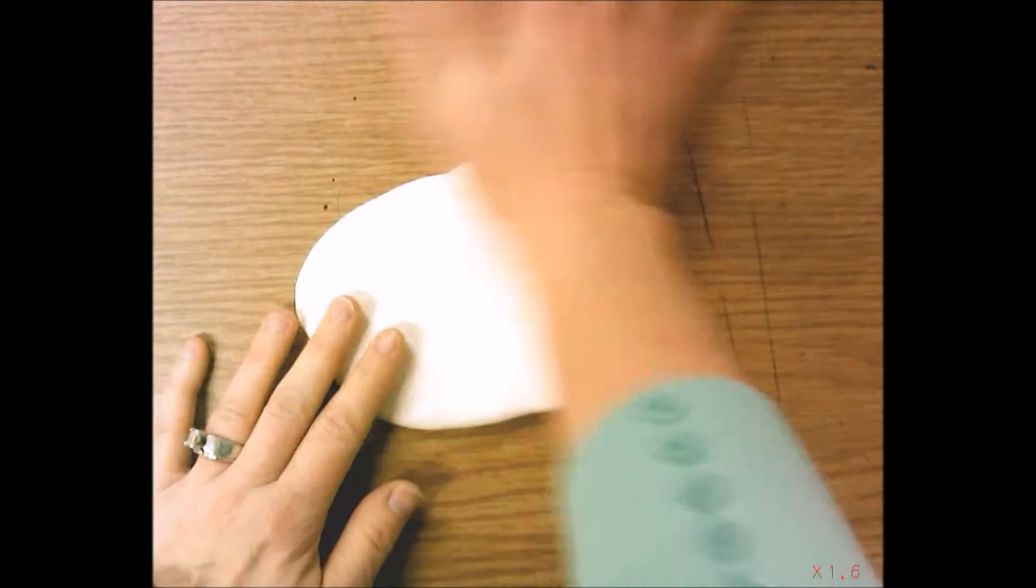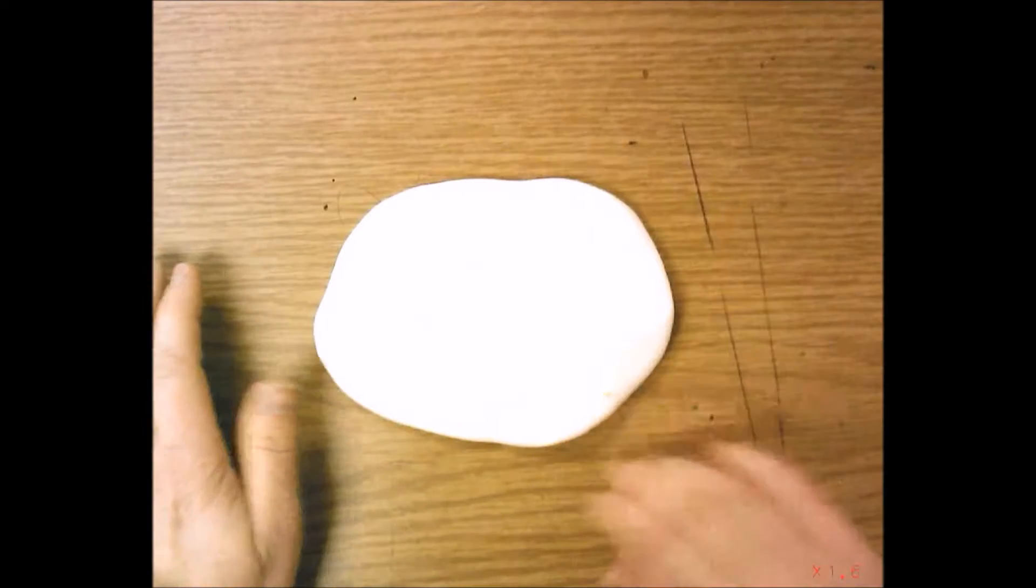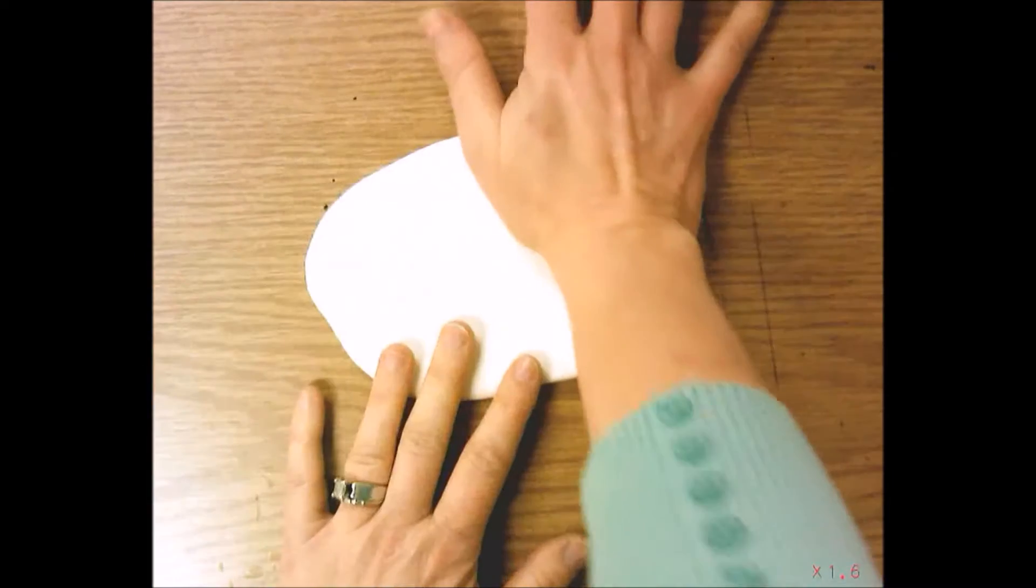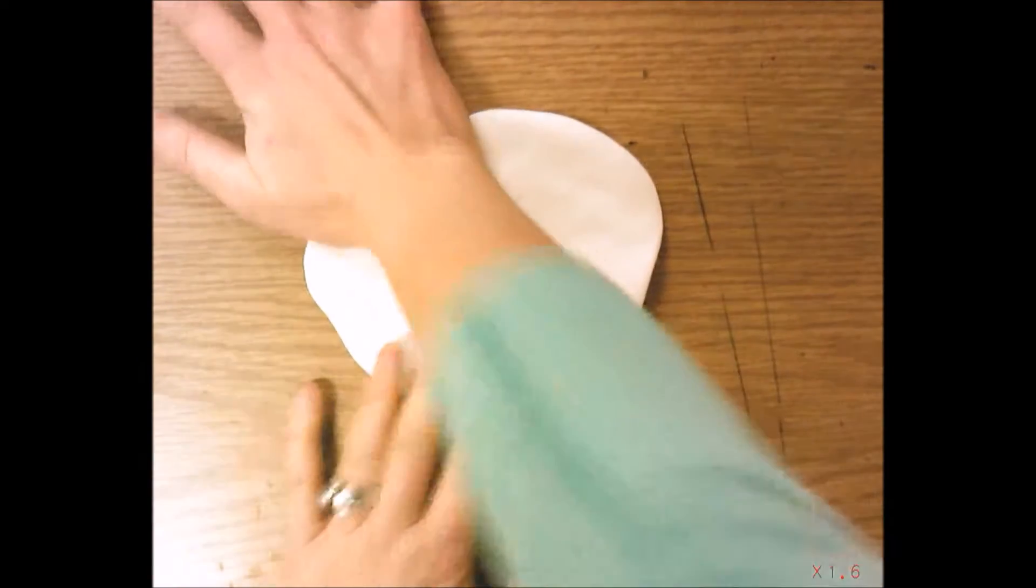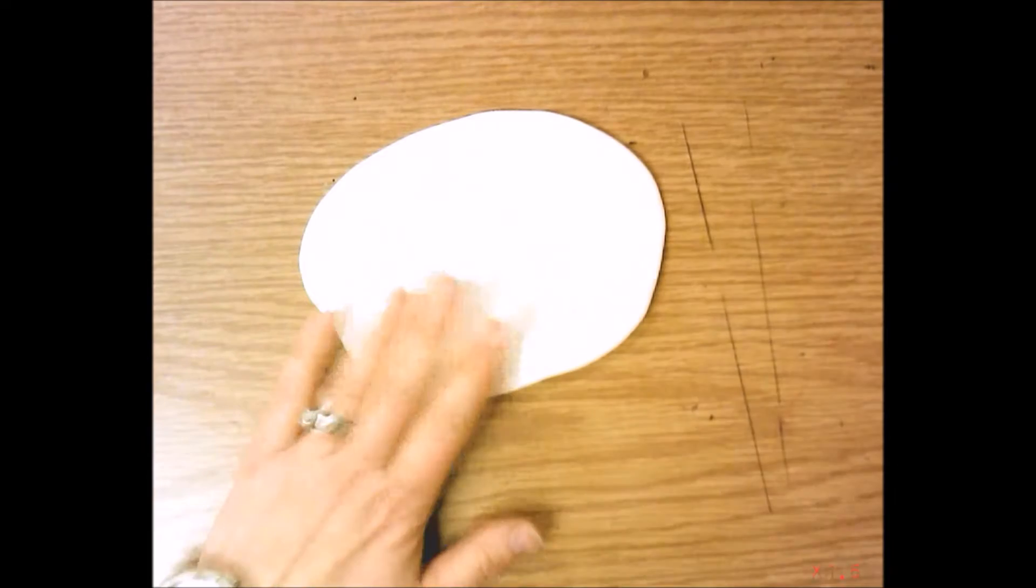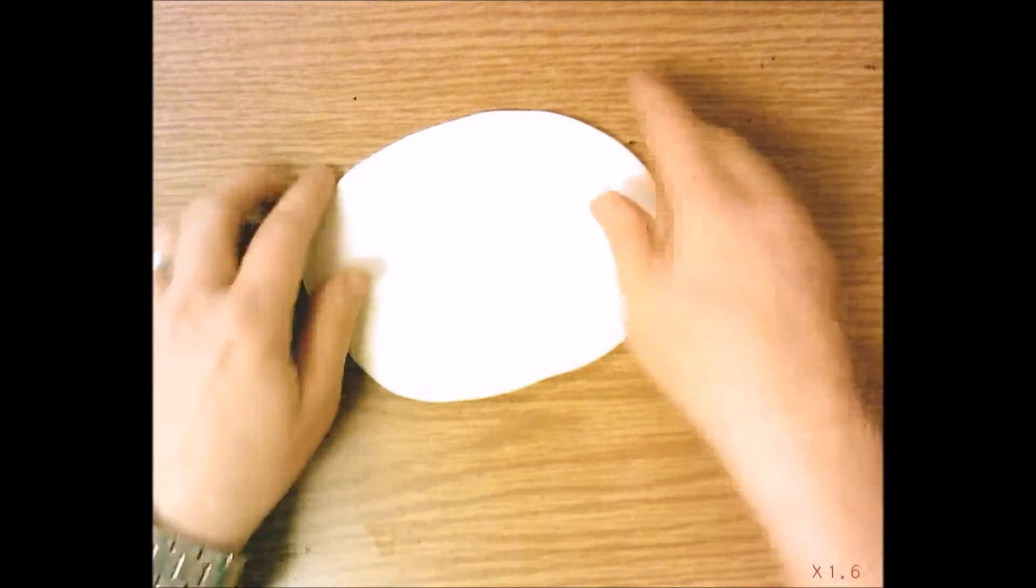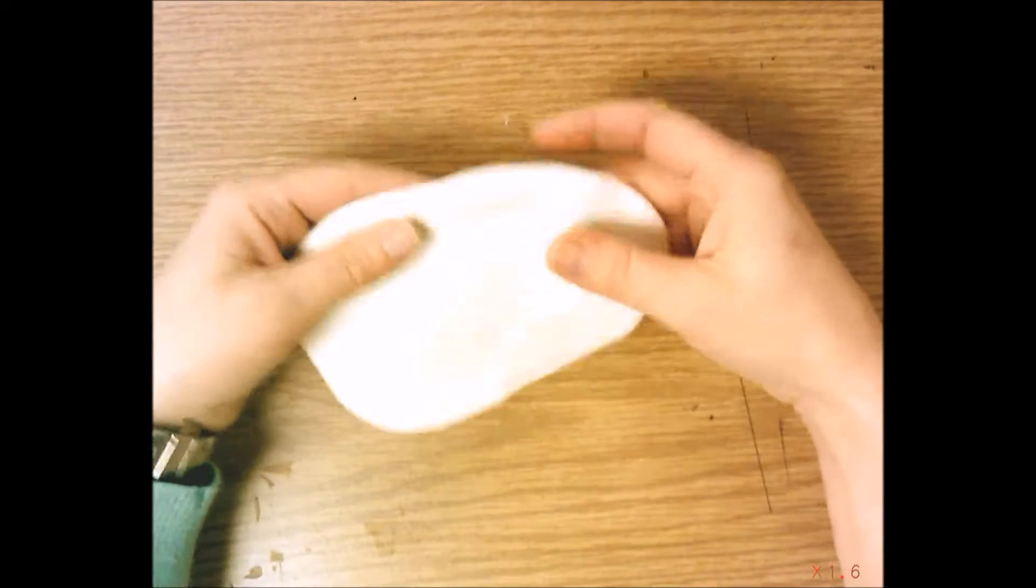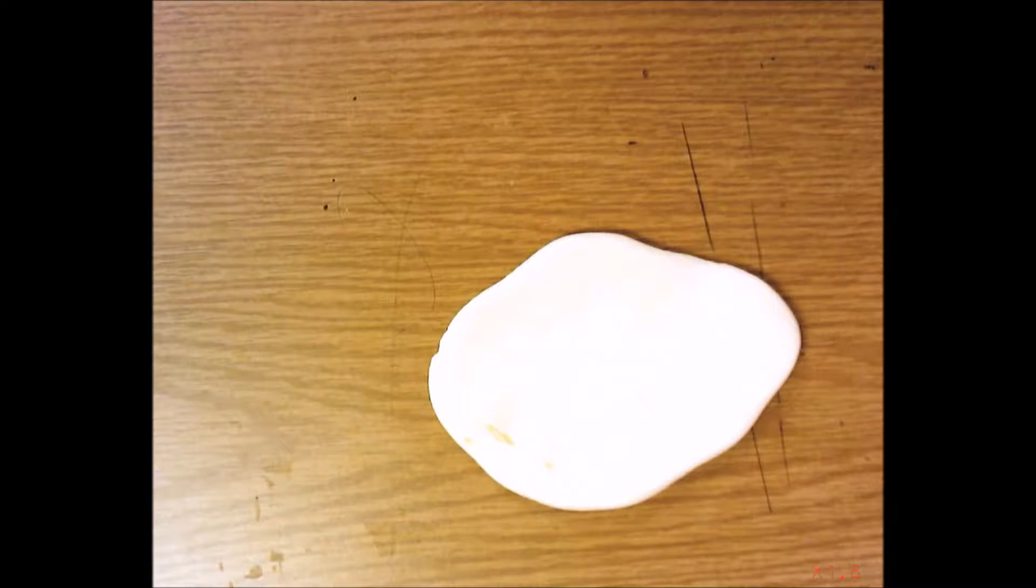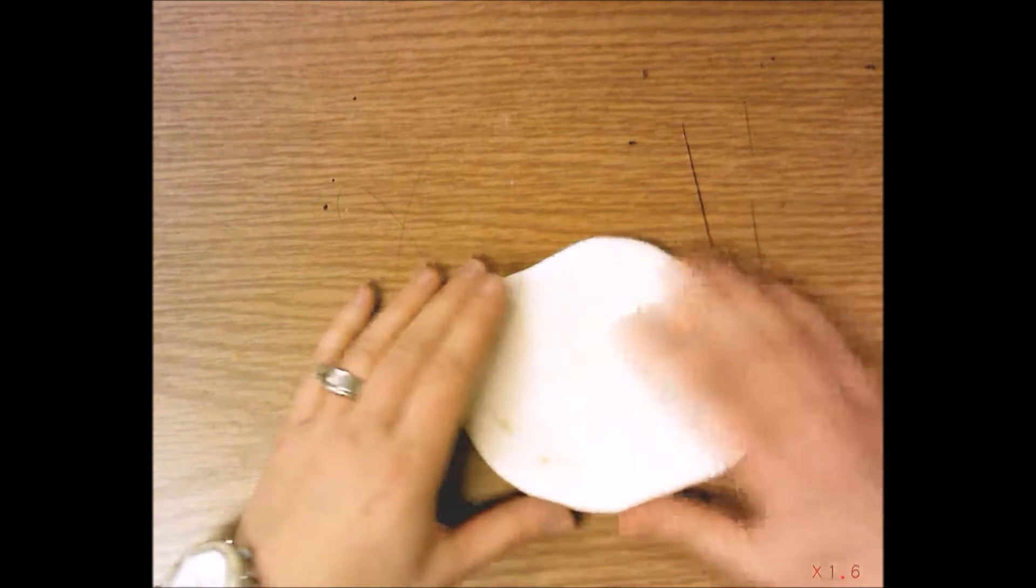You can also flip it over and do it on the other side, but my table is dirty so I'm going to keep this side clean. You don't want to make it too thin. This is air dry clay, so you're going to give this to me. I'm going to lay it nice and flat out to dry until you get a piece that looks like this that's nice and stiff.